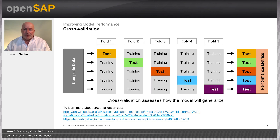Improving model accuracy is not the only goal — sometimes the model might be over-trained, so the accuracy might be too high. Cross-validation is a popular model validation technique for assessing how the results of a model will generalize on unseen data used for model scoring. One simple method involves partitioning data into complementary subsets: performing the analysis on one subset called the training or estimation set, and validating on the other subset called the validation or testing set. This is referred to as the hold-out method.